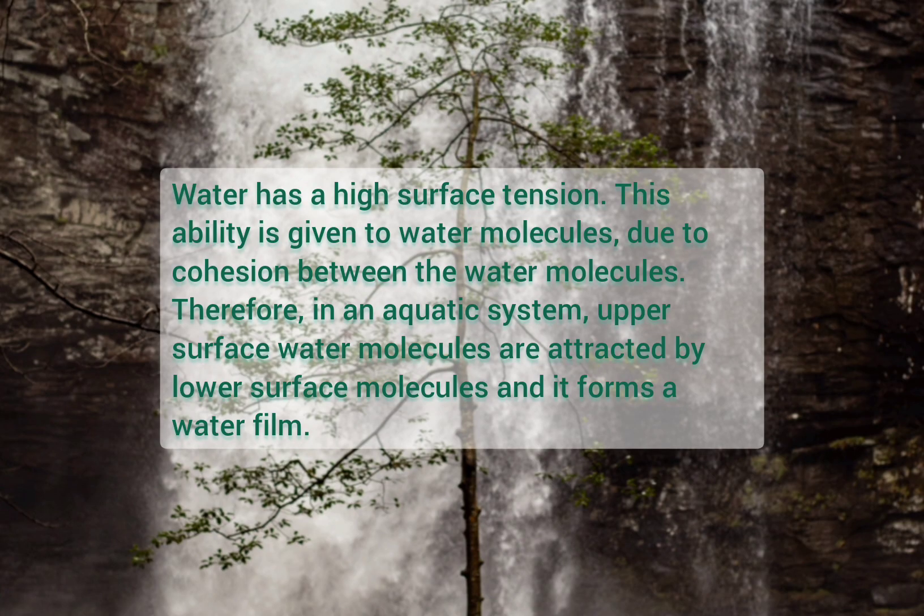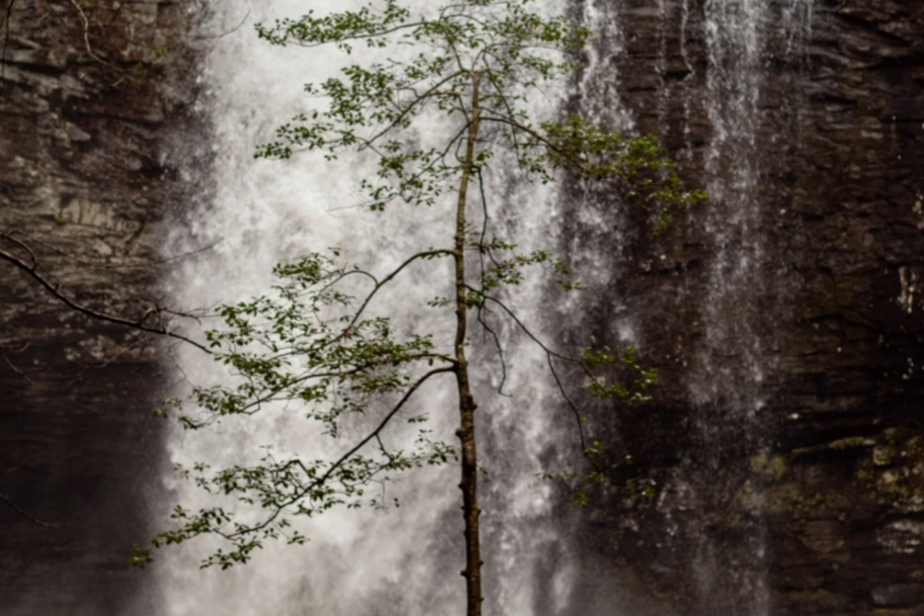Water has a high surface tension, which is given to water molecules due to cohesion between them. In an aquatic system, upper surface water molecules are attracted by lower surface molecules, forming a water film. Small insects, for example water skaters, can walk on the surface of a pond.